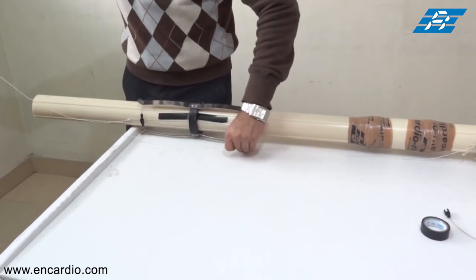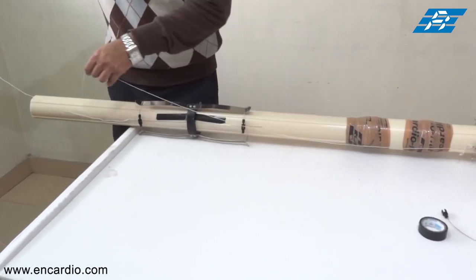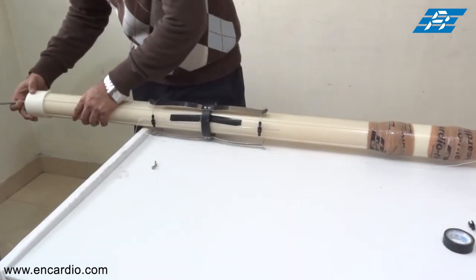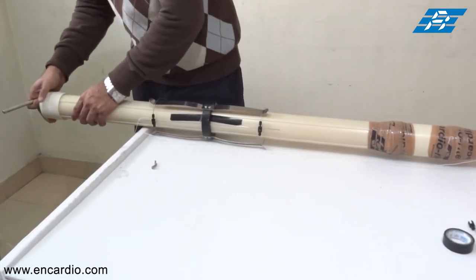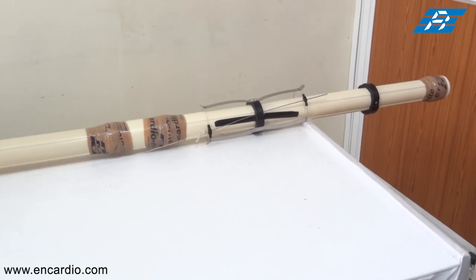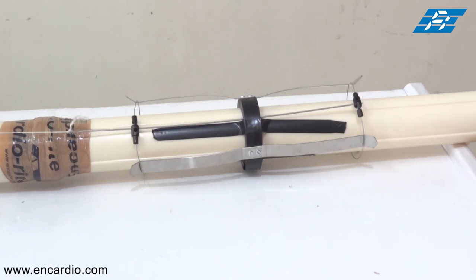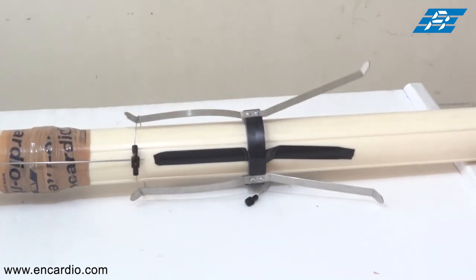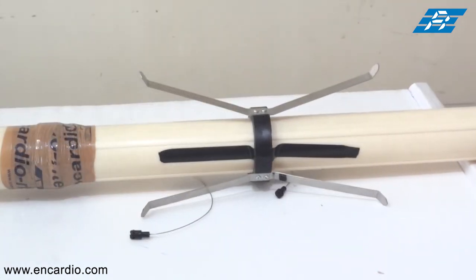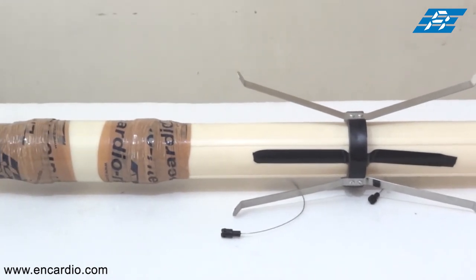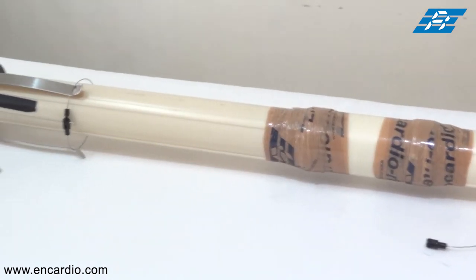After completing the installation of magnetic extensiometer with inclinometer pipe, cover the top with a top cap as shown here. The cords are pulled one by one starting from bottom most magnet. Continue the method for the required number of ABS casings and spider magnets.